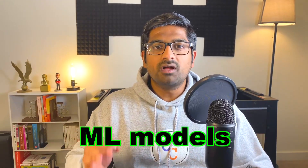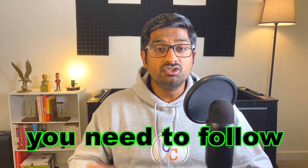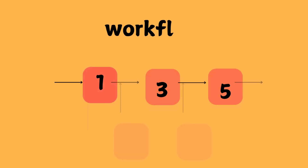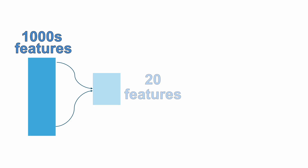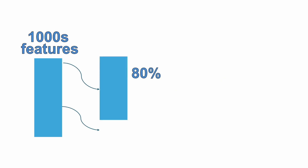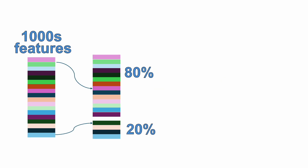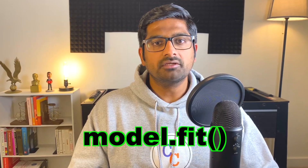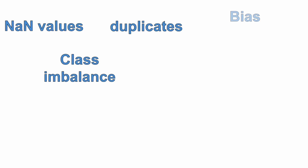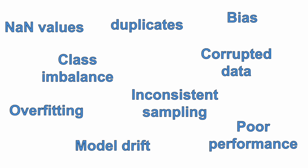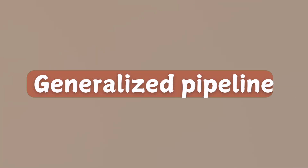To build production-level ML models, you need to follow a well-designed workflow. Think of this workflow as steps you need to follow in order to make sure your model performs to the best extent possible. Building ML models is not as simple as calling model.fit on scikit-learn. If you do one thing incorrectly, your entire pipeline can be compromised. So I want to present to you a generalized pipeline.